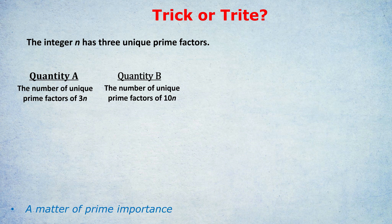Of course, we can think of other examples, most examples, where the number of unique prime factors of 10n would be more. For example, if n was an unrelated number like 7. Well, 10 times 7 would have three unique prime factors. 5 and the 2 from the 10, and the 7. So that's 3.